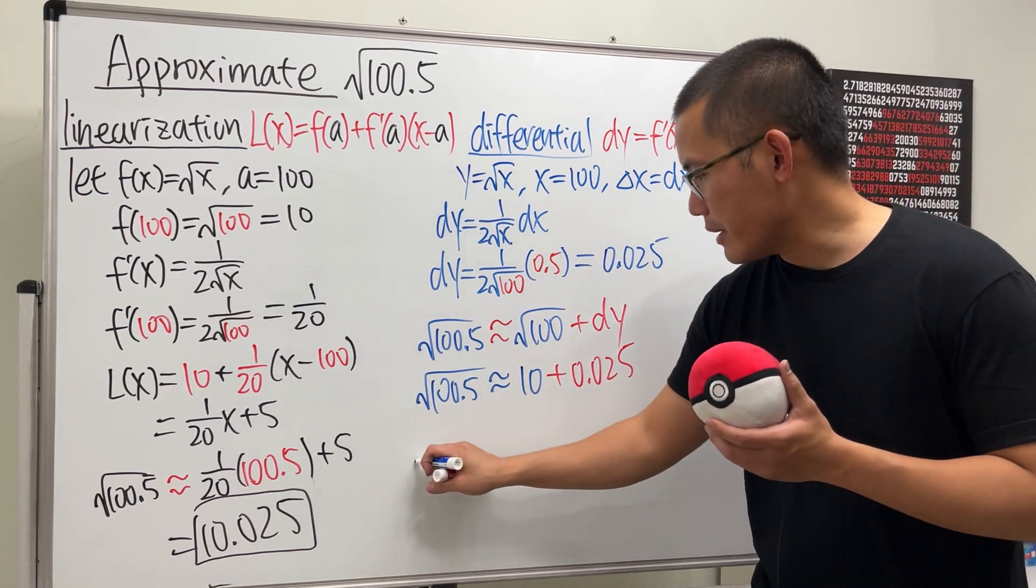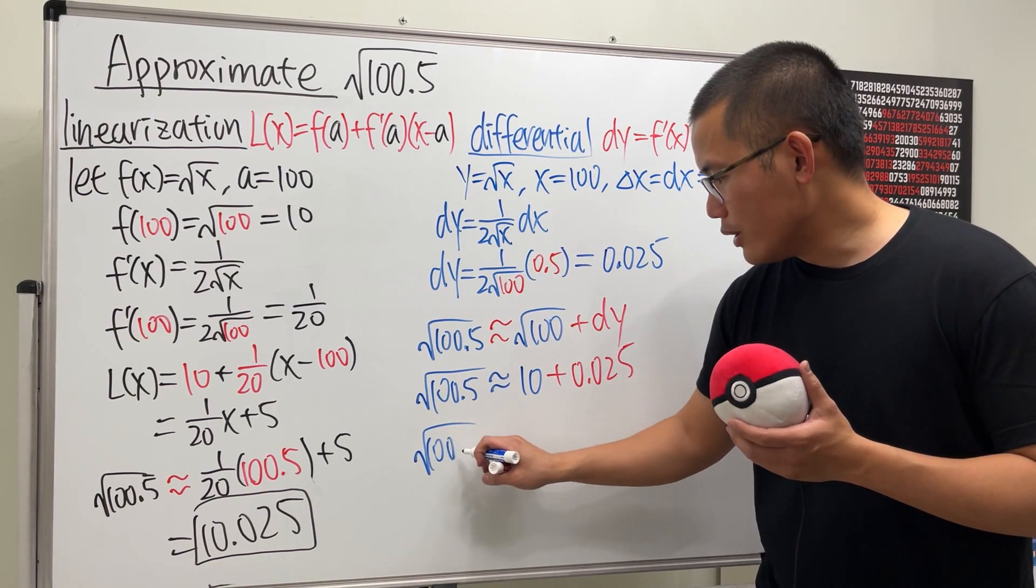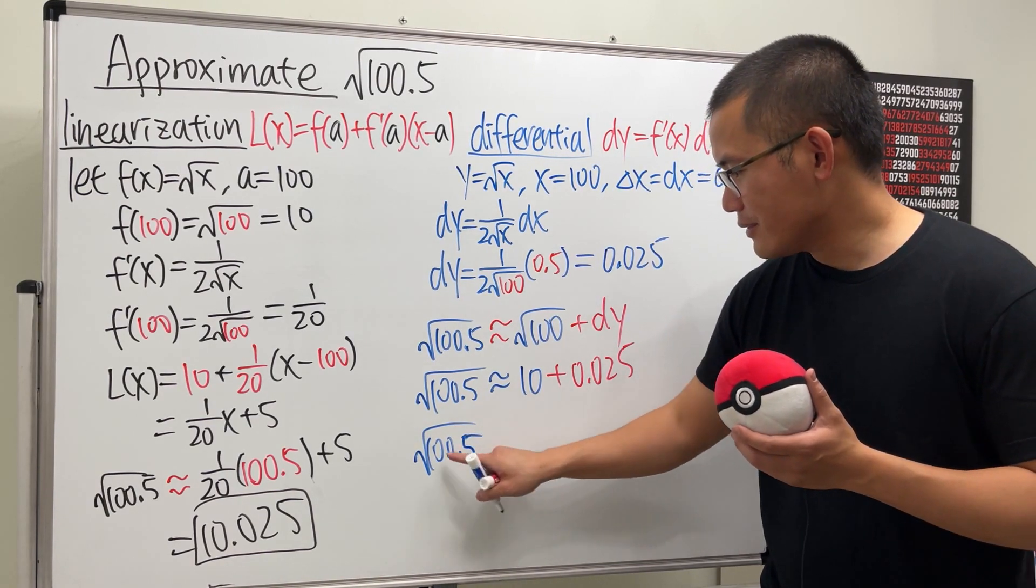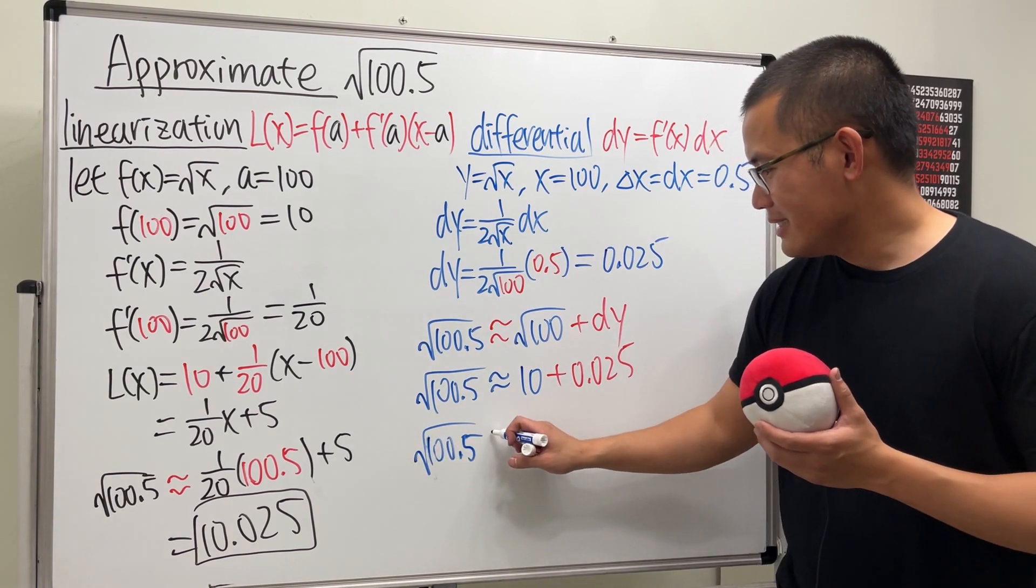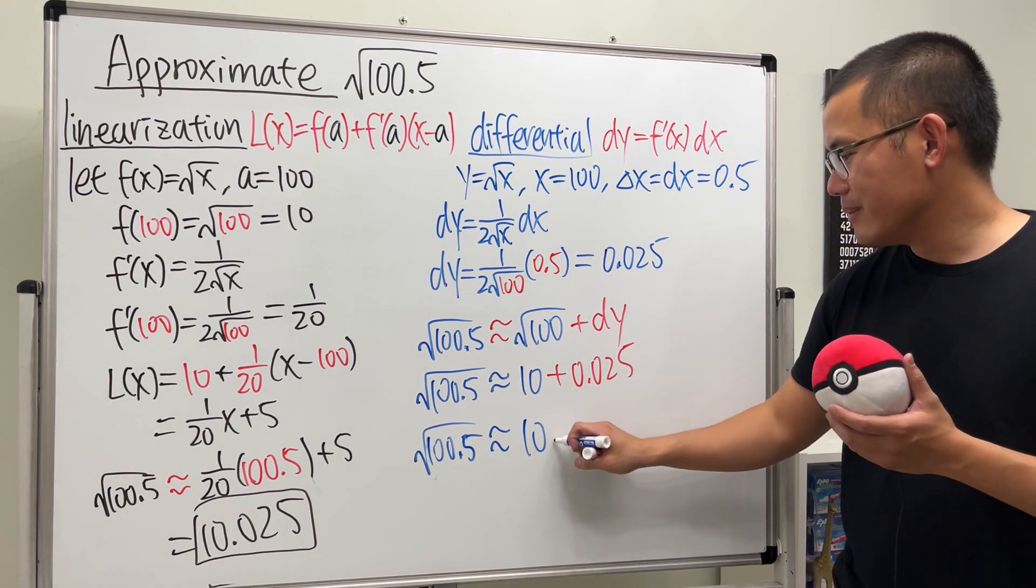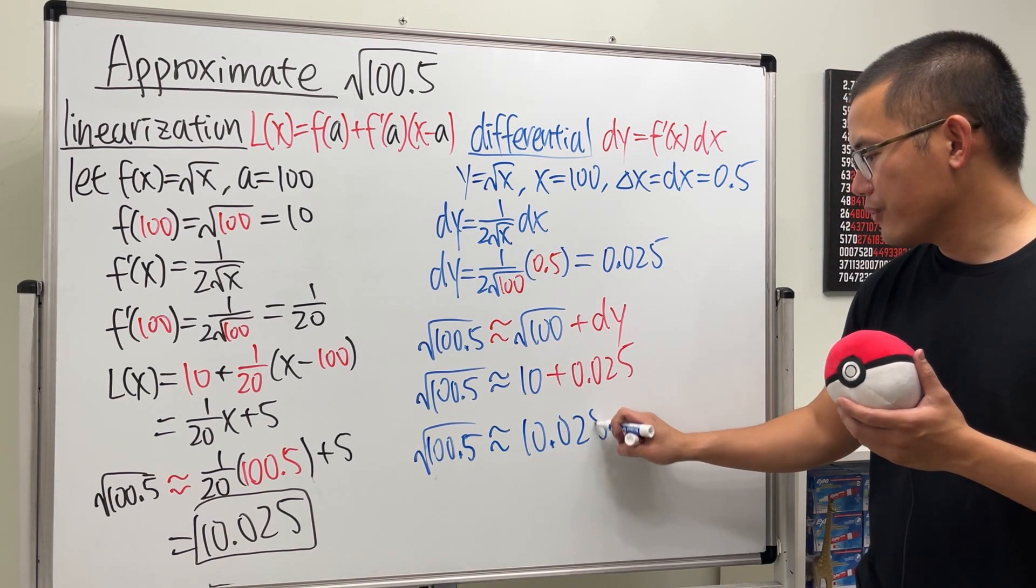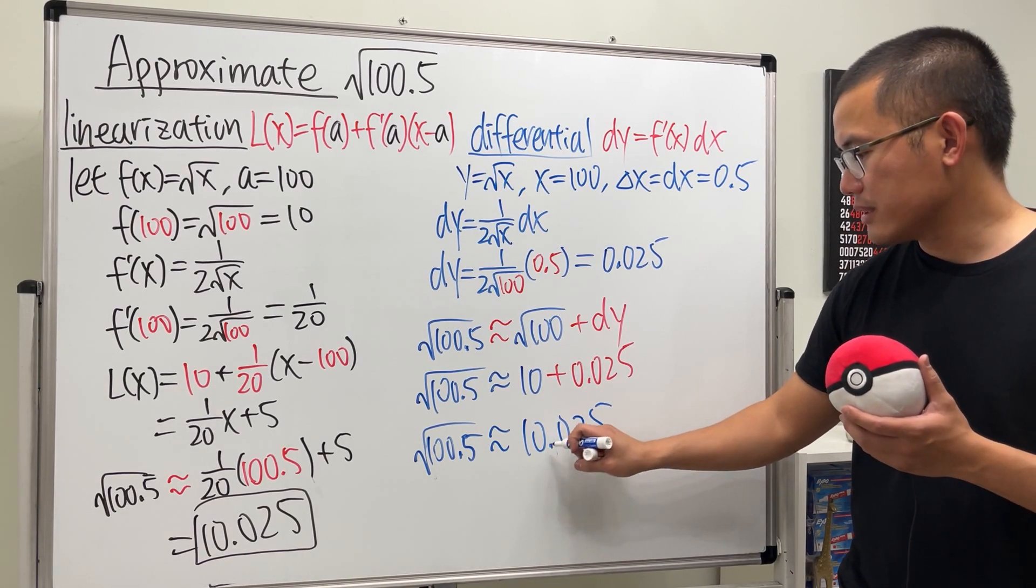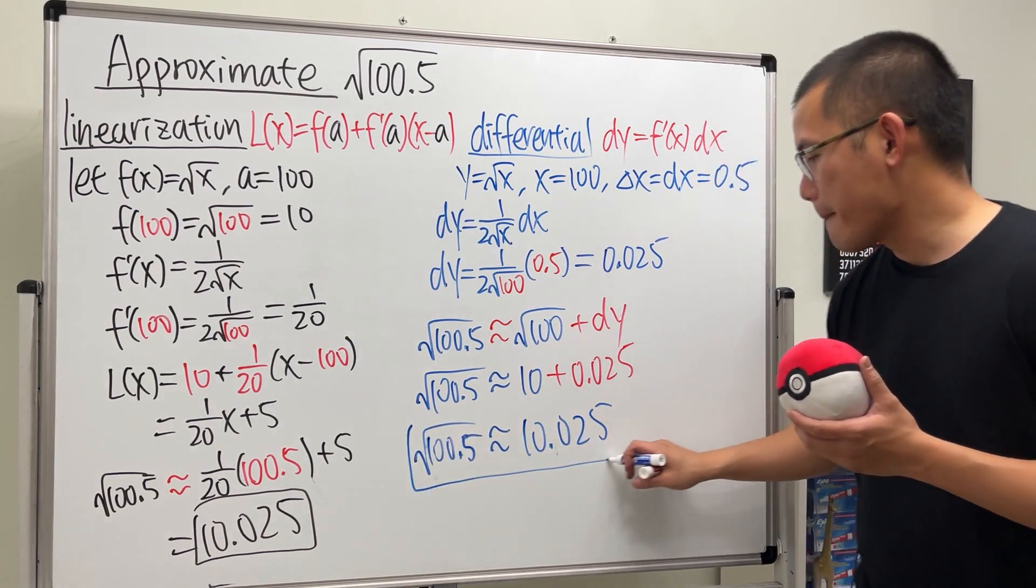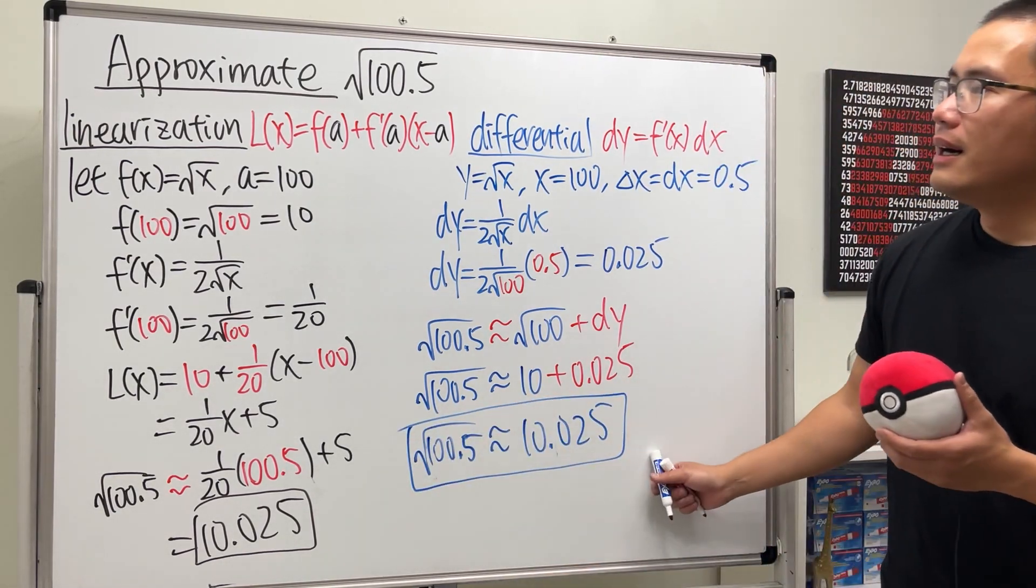Finally, of course, same answer, you guys know it. 100.5, right, square root of 100.5 is approximately 10.025. And this one right here is actually very, very close. That's it.